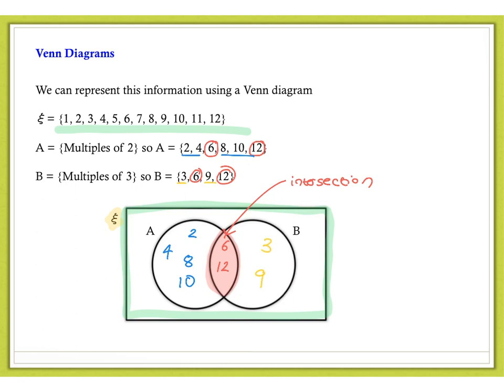The only thing left to do is identify the numbers that are neither in A or in B, which is 1, 5, 7 and 11. And they can be placed anywhere in the outer part of the Venn diagram.